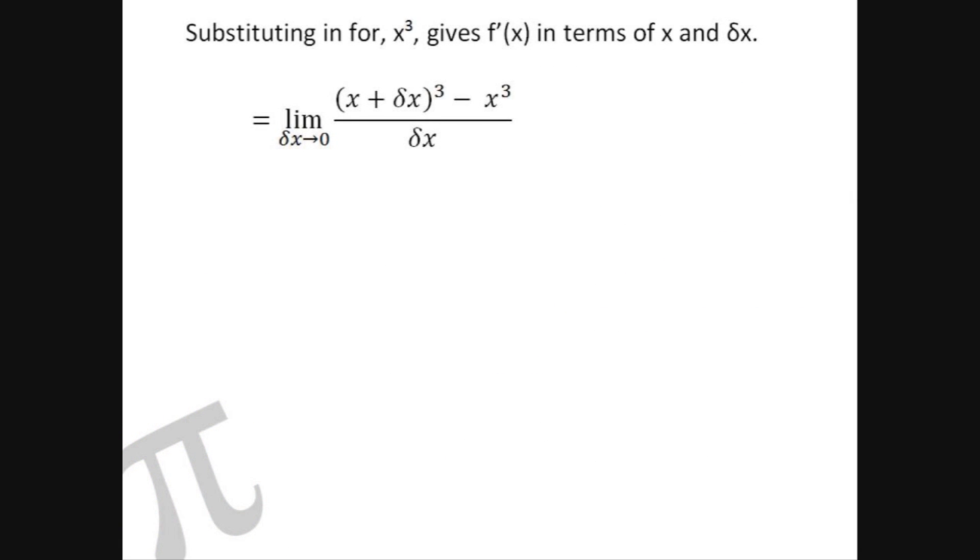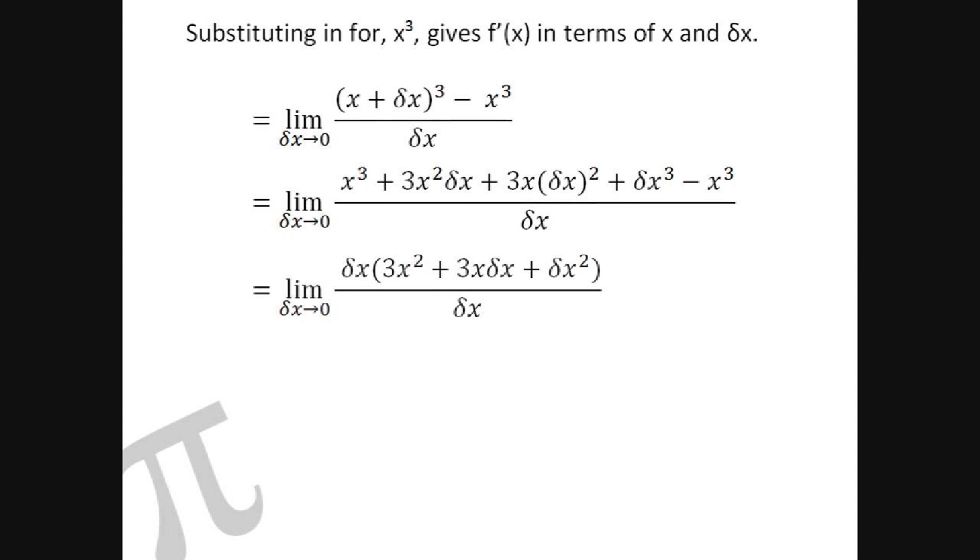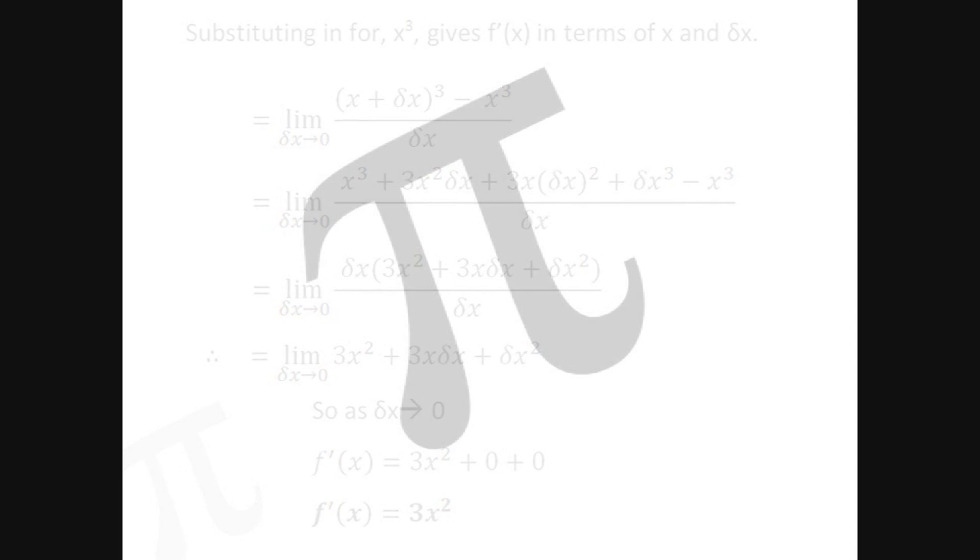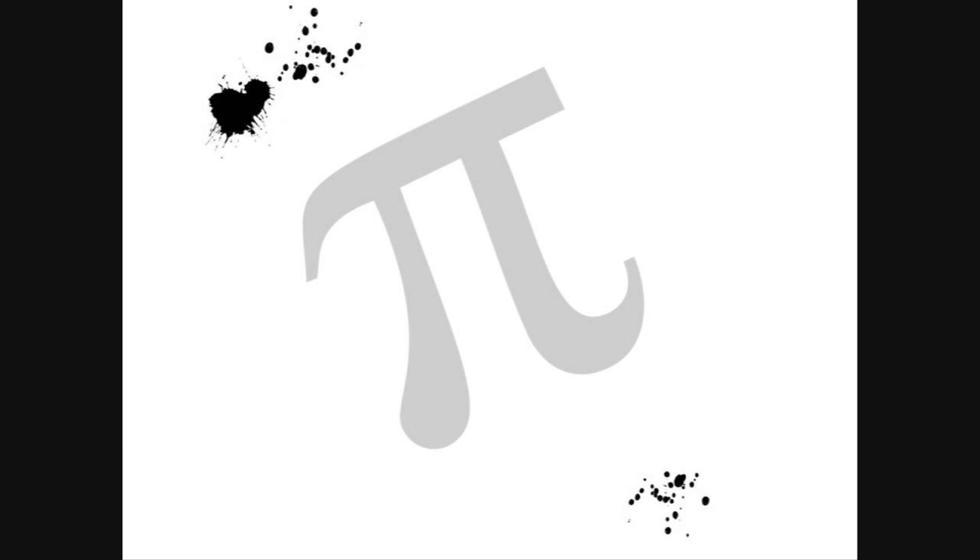Substituting in for x cubed gives f dashed x in terms of x and delta x, which all quite neatly and happily cancels out to 3x squared plus 3x delta x plus delta x squared. As delta x tends to zero, we get f dashed x equals 3x squared plus naught plus naught, which means f dashed x is 3x squared, which is what we all know and love already.